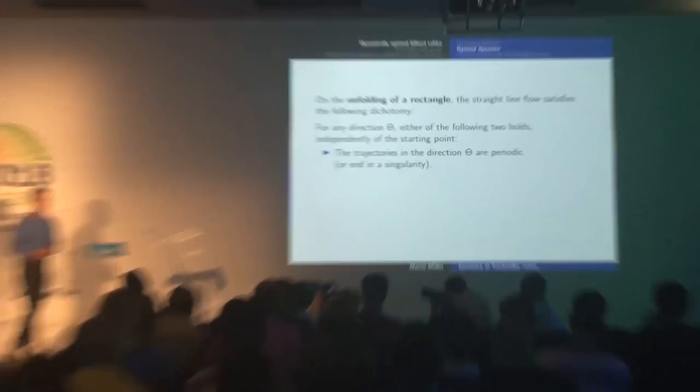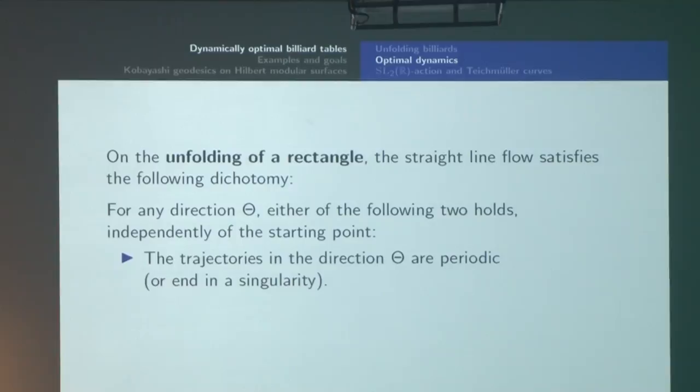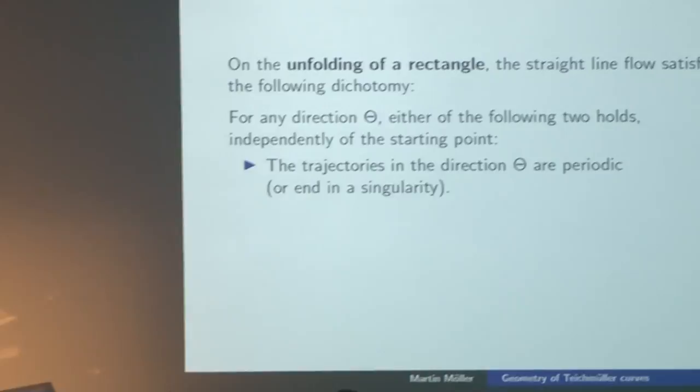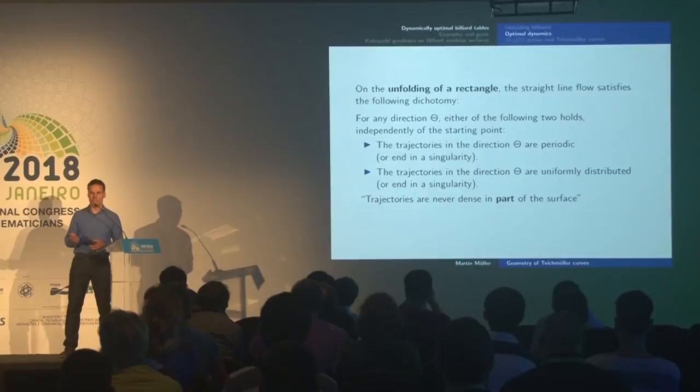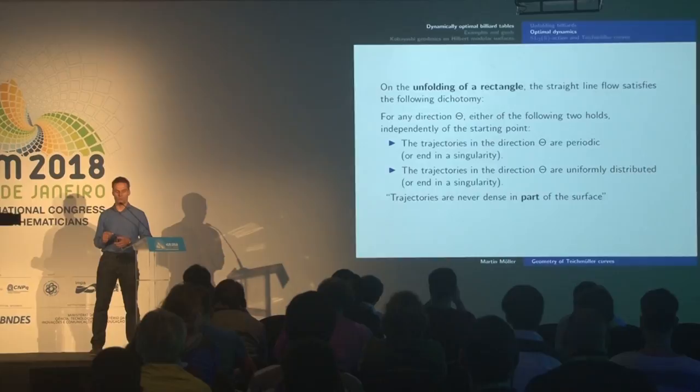What did we gain by unfolding the triangle? In studying long-term behavior of trajectories on a flat surface, we observe that on the special case of unfolding a rectangle — the true billiard tables in a billiard café — the following dichotomy holds. Given the chosen direction of a certain slope, either the trajectory is periodic (comes eventually back to the initial point), or the trajectory is uniformly distributed over the whole surface. We can memorize this by saying trajectories are never dense in only part of the surface: either they are dense everywhere, or they are dense nowhere.